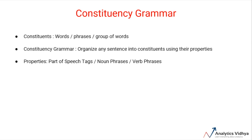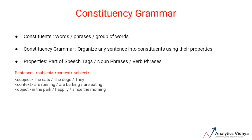For example, a constituency grammar can be defined such that any sentence can be organized into three constituents: a subject, a context, and an object. These constituents can take different values and accordingly generate different sentences. For example: 'The dogs are barking in the park,' 'They are eating happily,' or 'The cats are running since morning.' Another view of constituency grammar is to define the grammar in terms of part of speech tags.